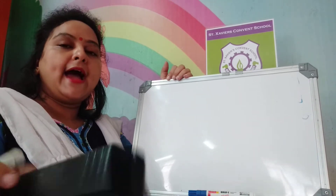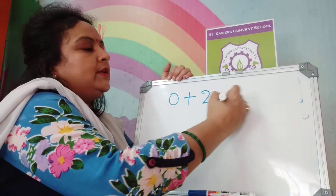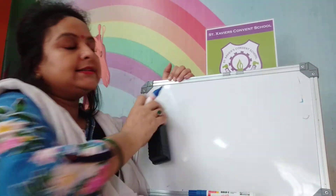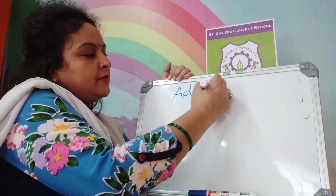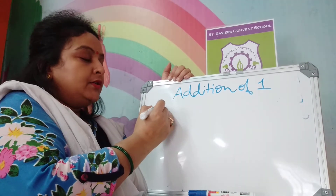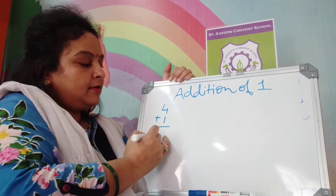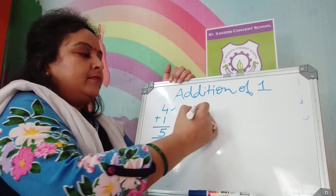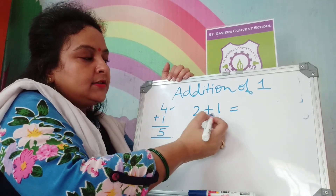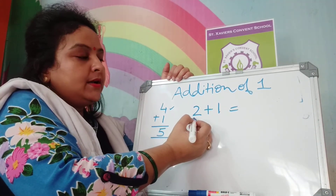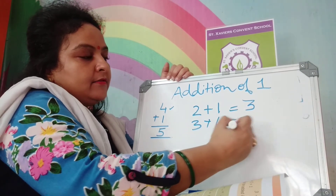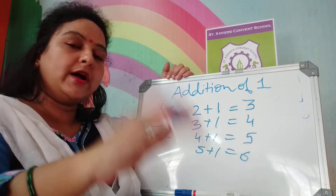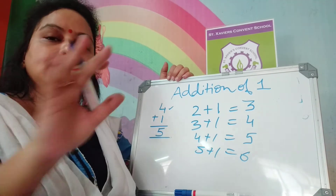When you add 0 to any number, you will get the same answer — it will not change the number. The other thing is addition of 1: if you add 1 to any number, you will get the next number. What comes after 4? 5. So 2 plus 1 is 3, 3 plus 1 is 4, 4 plus 1 is 5, 5 plus 1 is 6. When we add 1 to any number, we get the next number.